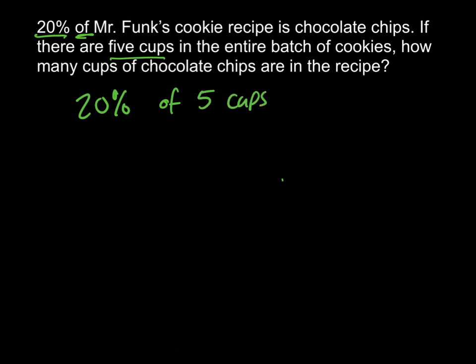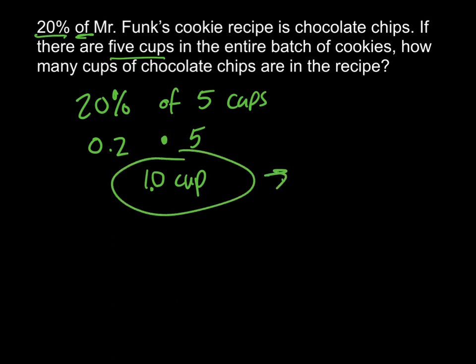And then we can bring it down. 20% we want to write as a decimal, because we're not going to multiply it as a percent. So 20% as a decimal is 0.2. 'Of' means to multiply, and then you have five cups. Two tenths times five: two times five gives you ten, and this is tenths, so it will be one. So we have one cup.